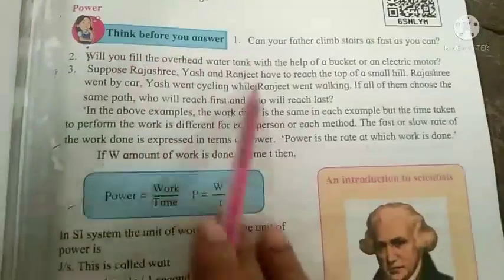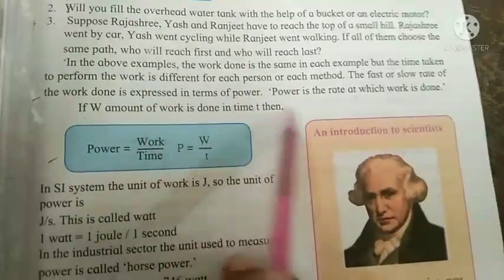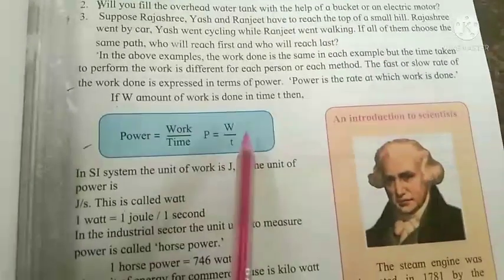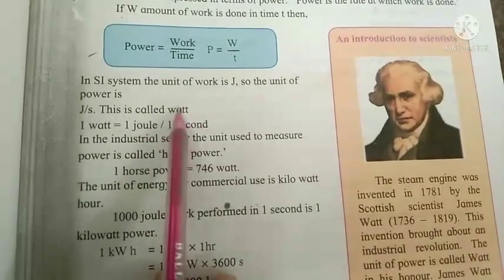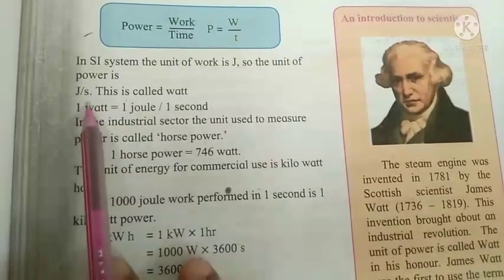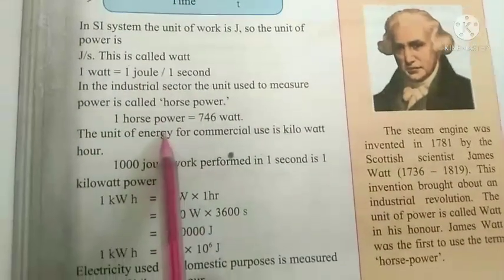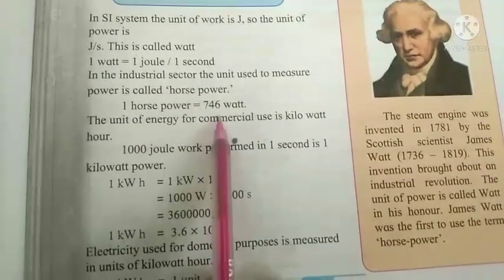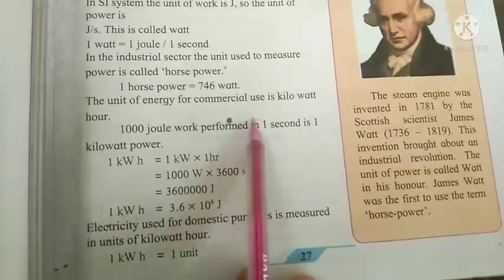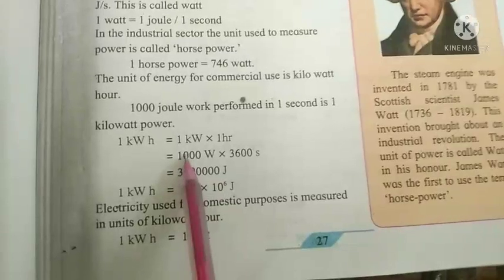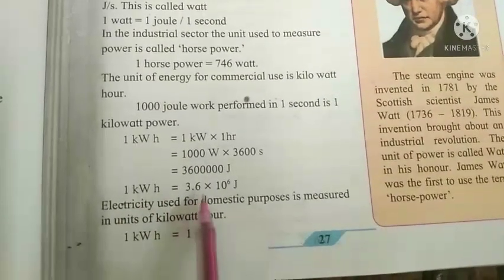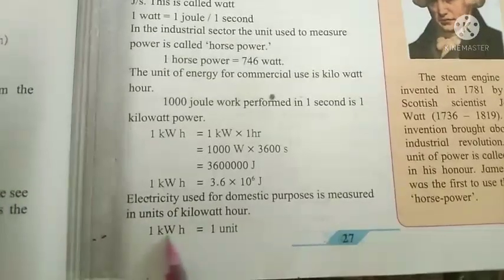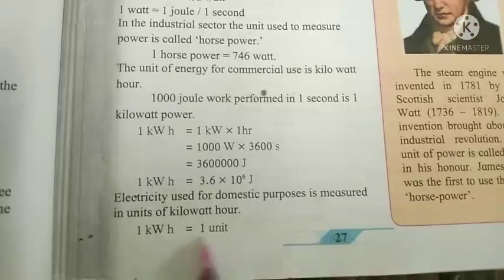What is power? Power is the rate at which work is done: Power = Work / Time, or P = W/T. In the SI system, work is in joules and the unit of power is joule per second, called watt (W). In the industrial sector, power is also measured in horsepower: 1 horsepower = 746 watts. The unit of energy for commercial use is kilowatt-hour: 1 kilowatt-hour = 3.6 × 10⁶ joules. Electricity used for domestic purposes is measured in units of kilowatt-hours, equal to one unit.